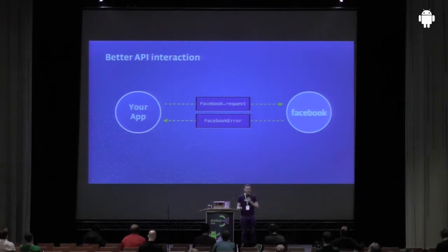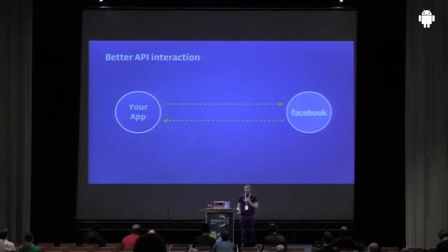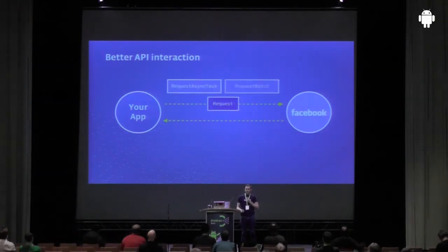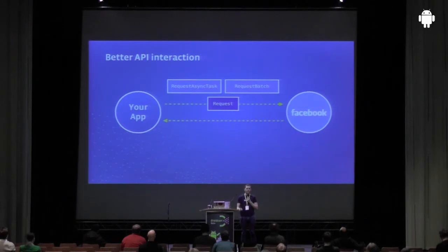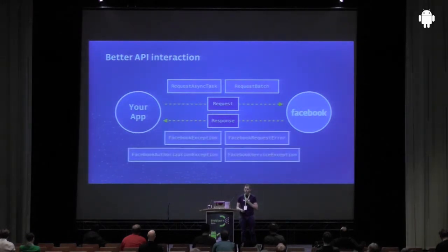In SDK 2.0, we had facebook.request for managing requests to the APIs. If something went wrong, you would get back a Facebook error, which was pretty bad because you had to handle that all yourself inside your app. We now have the request object with sister objects — RequestAsyncTask, which matches Android async tasks for better asynchronous performance, and RequestBatch which lets you batch up a bunch of requests and send them off in one go for even faster performance. When you get data back from the API, you get a response object.